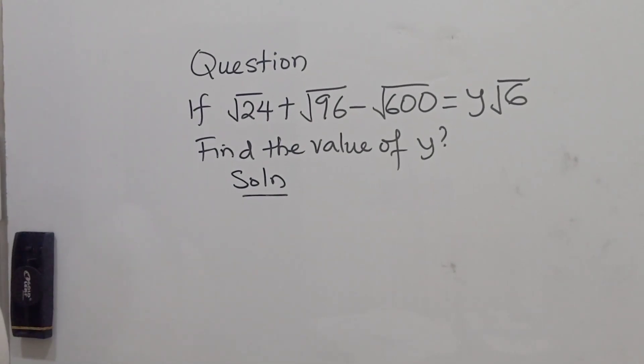Hello everyone, you are welcome once more again to one more example. Today we have a question on the board, a problem on surds. It says if root 24 plus root 96 minus root 600 is equal to y root 6, find the value of y.